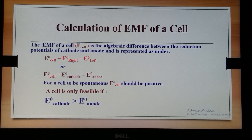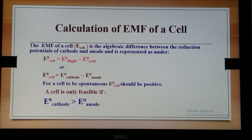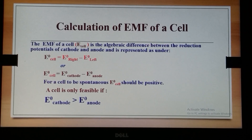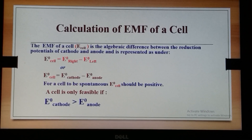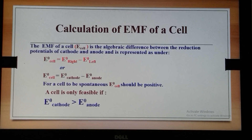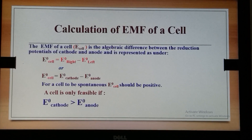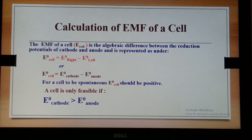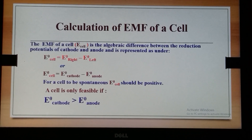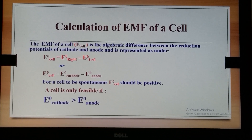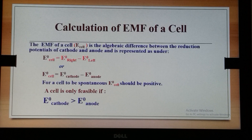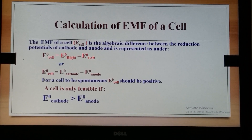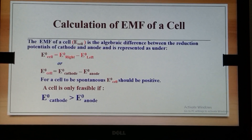For a cell to be spontaneous, the E cell should be positive — only then will the cell be feasible and working. Therefore E⁰cathode should be greater than E⁰anode.